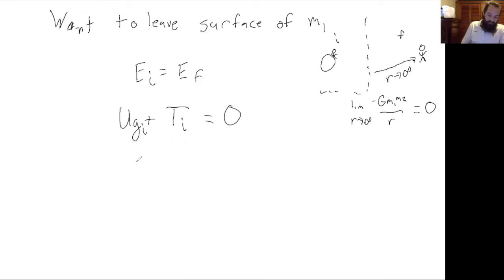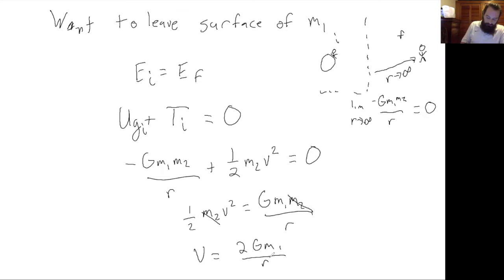Now we have negative Gm1m2 over r plus one half m2 v squared equals zero. We'll add the Gm1m2 over r to both sides. Now we're going to cancel out the masses. We're solving for velocity because we wanted to know how much velocity we would need to escape the surface. You would multiply by two and take the square root of both sides, and you would get this which is your escape velocity.